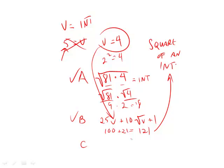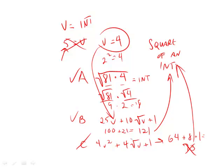Finally, with C, we have 4V squared plus 4 times the square root of V plus 1. Now, we plug our 4 into there. We end up getting here 64 plus 8 plus 1, which is equal to 73. That is not the square of an integer. So boom, just like that, A and B are our answers.